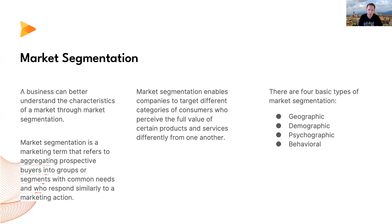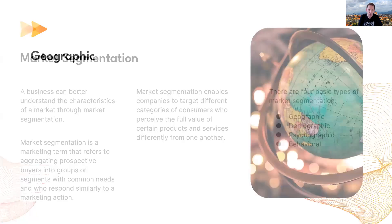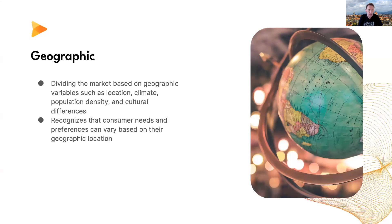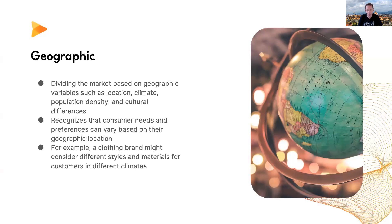Starting with geographic segmentation — this is where you divide the market based on geographic variables such as location, climate, population density, and cultural differences. It recognizes that consumer needs and preferences can vary based on geographic location. For example, a clothing brand might consider different styles and materials for customers in different climates.